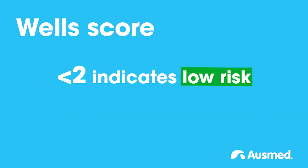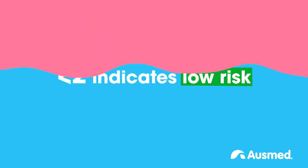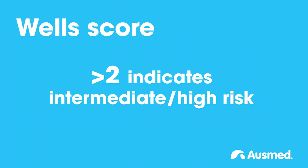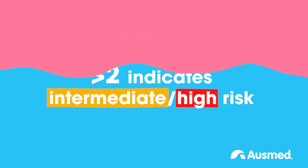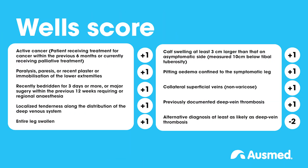A score of less than 2 indicates low risk, and above 2 indicates intermediate to high risk. The tool assists the clinician in deciding whether the patient requires a duplex ultrasound scan to exclude a DVT.